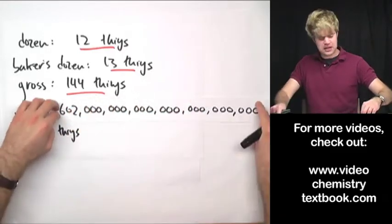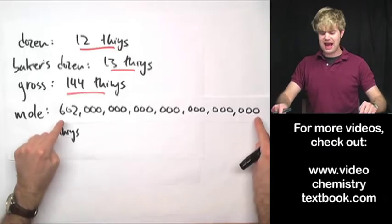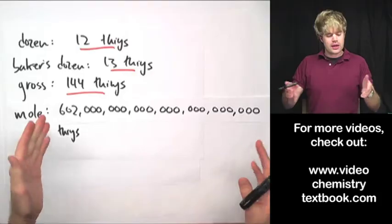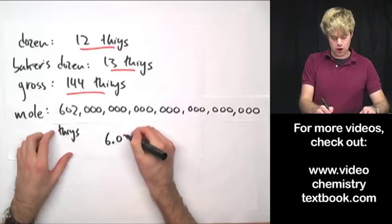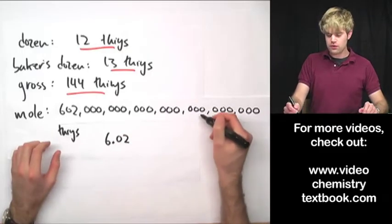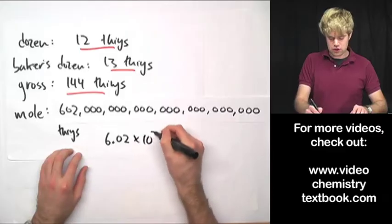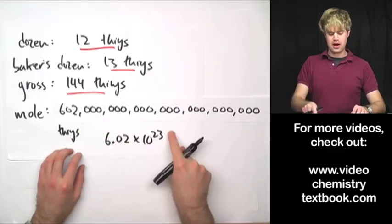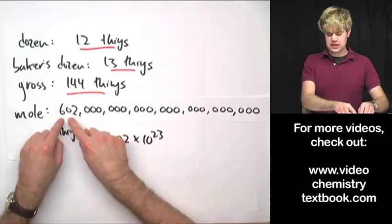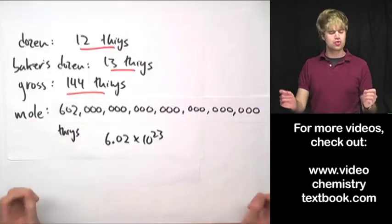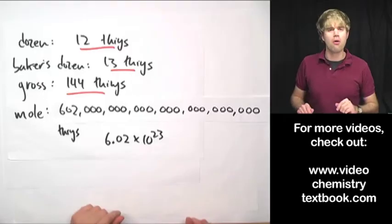And because this is such a big number, 602 sextillion, it's often written in scientific notation as 6.02, and we move this decimal place all the way up here to 23 spots. So 6.02 times 10 to the 23rd—602 sextillion things in one mole.